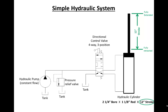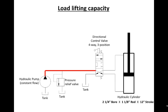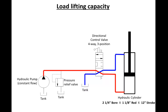Now let's talk about how we calculate the load lifting capacity of a hydraulic system. In this simple hydraulic system, a pump provides a constant flow of hydraulic oil. If the directional control valve were shifted to this position, the oil would flow through it and down into the bottom of the hydraulic cylinder. As the hydraulic cylinder moves, the oil in the top would be forced out back through the valve and into the reservoir.